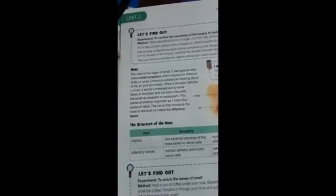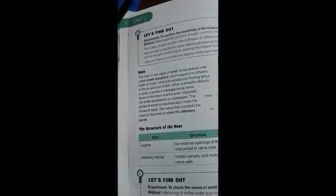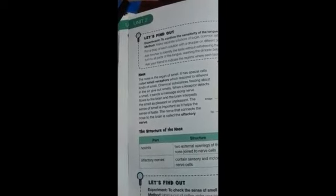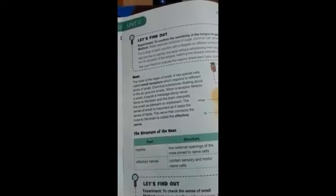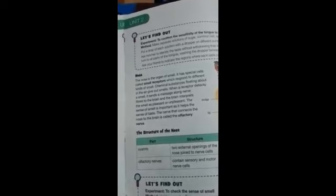The last sense organ is nose. Nose is the organ of smell and it has special cells called smell receptors. Smell receptors detect smell impulses and pass them to the brain. The brain interprets the smell as pleasant or unpleasant.